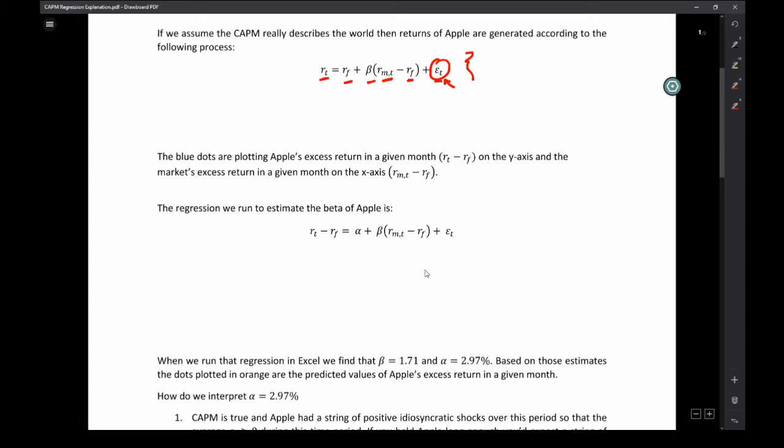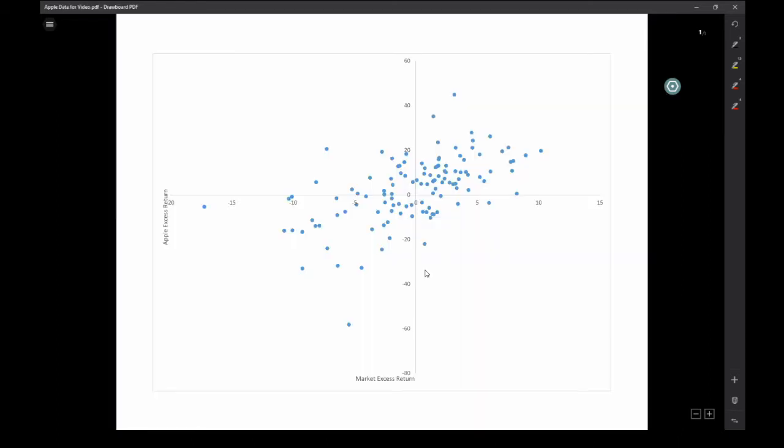So what I did is I grabbed the stock returns for Apple, the monthly stock returns for the decade of 2000. And what I've got here is I plotted the market excess return on the X-axis. So that is whatever the return in that particular month was minus the risk-free rate. And on the Y-axis over here, I've got Apple's excess return. Each point is the actual excess return for both the market and Apple.